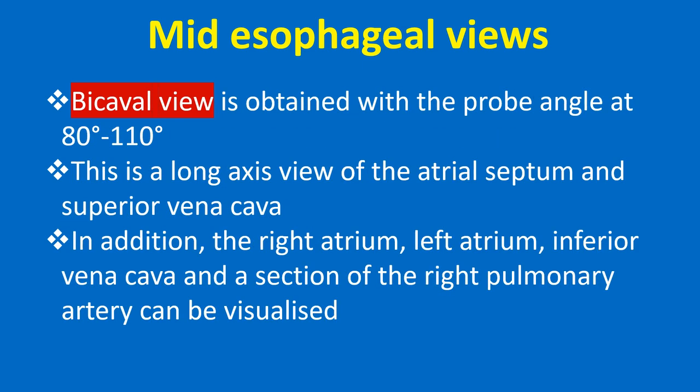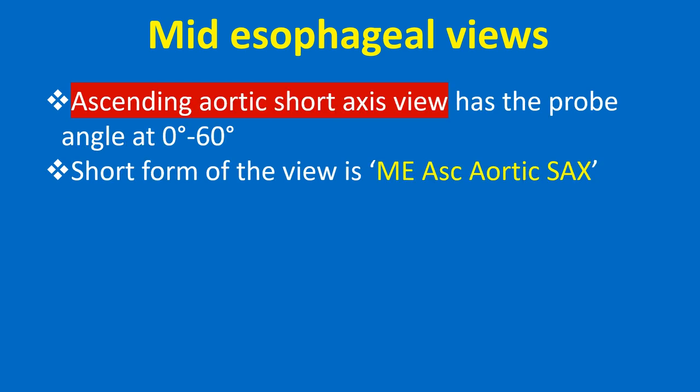The bicaval view is obtained with the probe angle at 80-110 degrees. This is a long axis view of the atrial septum and superior vena cava. In addition, the right atrium, left atrium, inferior vena cava, and a section of the right pulmonary artery can be visualized.